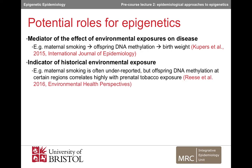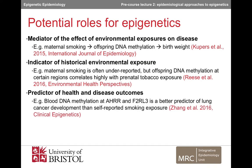Epigenetics might also be a useful indicator of historical environmental exposure in studies. For example, maternal smoking is often underreported, but offspring DNA methylation correlates highly with prenatal tobacco exposure and could provide an accurate measure for maternal smoking in studies where data is missing or of poor quality. Similarly, epigenetics could be a useful predictor of health and disease outcomes. For example, blood DNA methylation at certain regions has been shown to be a better predictor of lung cancer development than self-reported smoking.